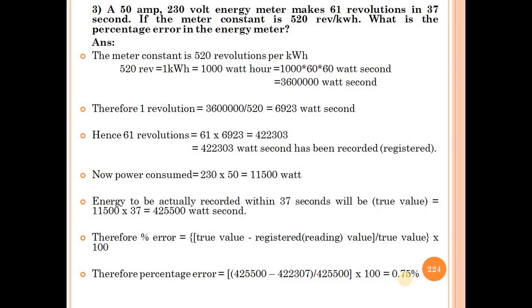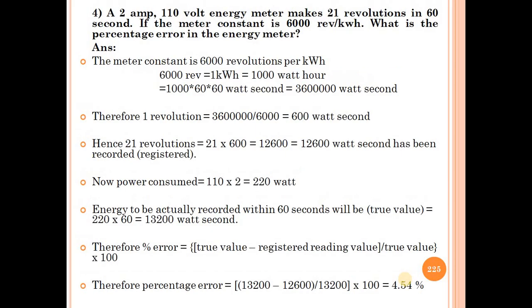Now the 4th example: A 2 ampere, 110 volt energy meter makes 21 revolutions in 60 seconds. If the meter constant is 6000 rev per kilowatt hour, what is the percentage error in the energy meter?